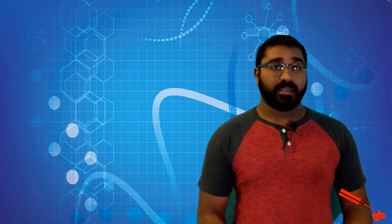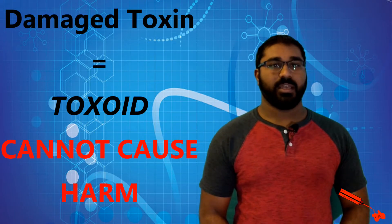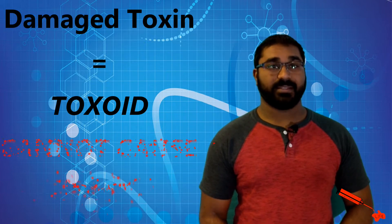Then it's purified, and the damaged toxin, which is now called a toxoid, is injected into the patient. That's how an immune response is made against the toxin.